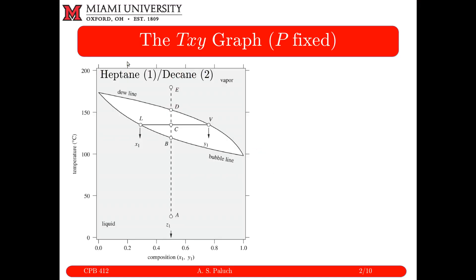Here's an example of a TXY phase diagram from the book for the system Heptane and Decane. I have plotted temperature versus composition, which is why we call it a TXY phase diagram. In order to plot in two dimensions like this, pressure is fixed — and so throughout this entire phase diagram, pressure is fixed at a given value.